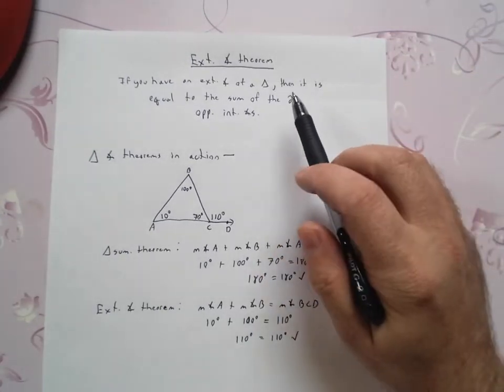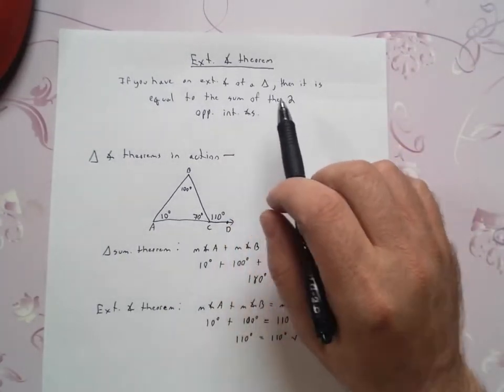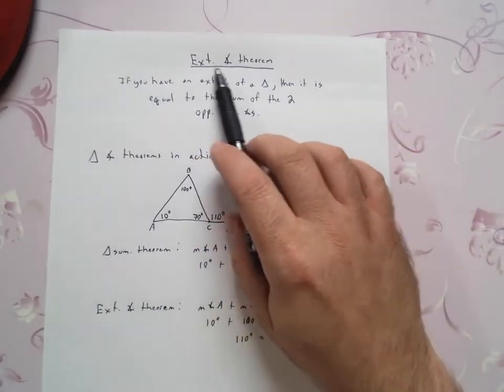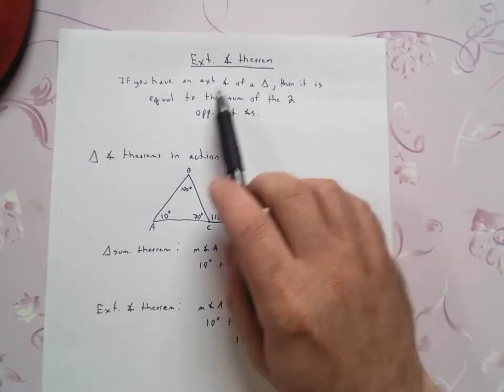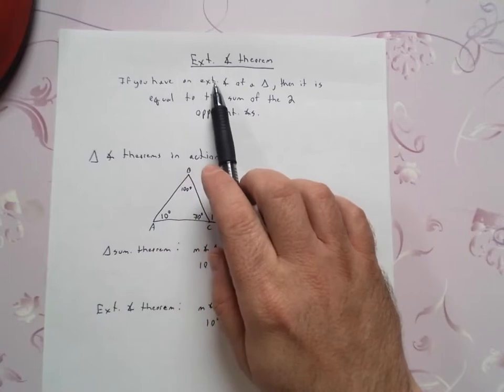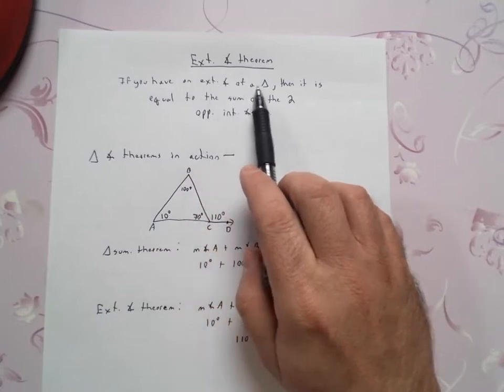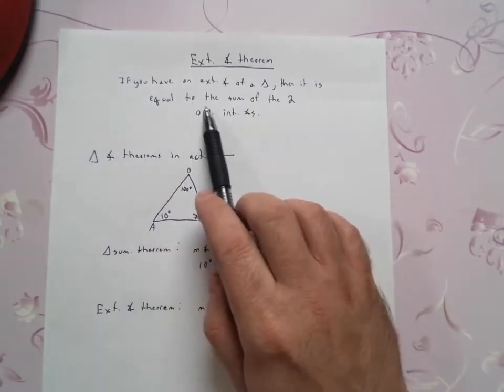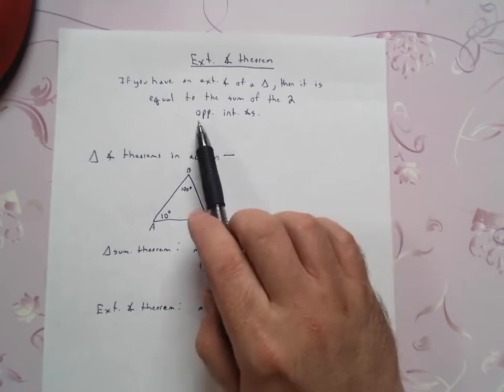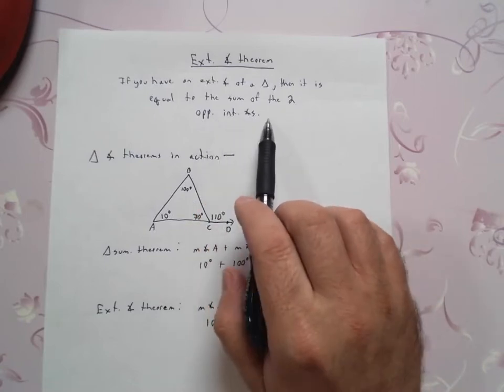Continuing our exploration of triangles and the interior and exterior, since we know what exterior angles are now, we have this exterior angle theorem for triangles, which says if you have an exterior angle of a triangle, then it is equal to the sum of the two opposite interior angles.